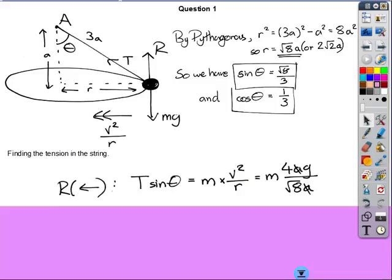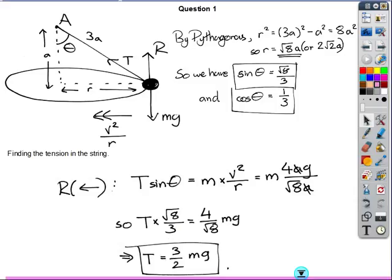So if I resolve toward the centre of the circle, I get the horizontal component of tension, which is T sin theta, and that has to equal, by Newton's second law, mass times acceleration, Ma. And I know that A is v squared over r. And I also know, from the question, that v squared is 4ag. And I know from my calculations, that r is root 8 times a. So the a's cancel out straight away. I know that sin theta is root 8 over 3. So all I have to do now is substitute everything I know, cancel everything down, rearrange everything, and I get a really nice answer. T is 3 over 2 Mg. Excellent.